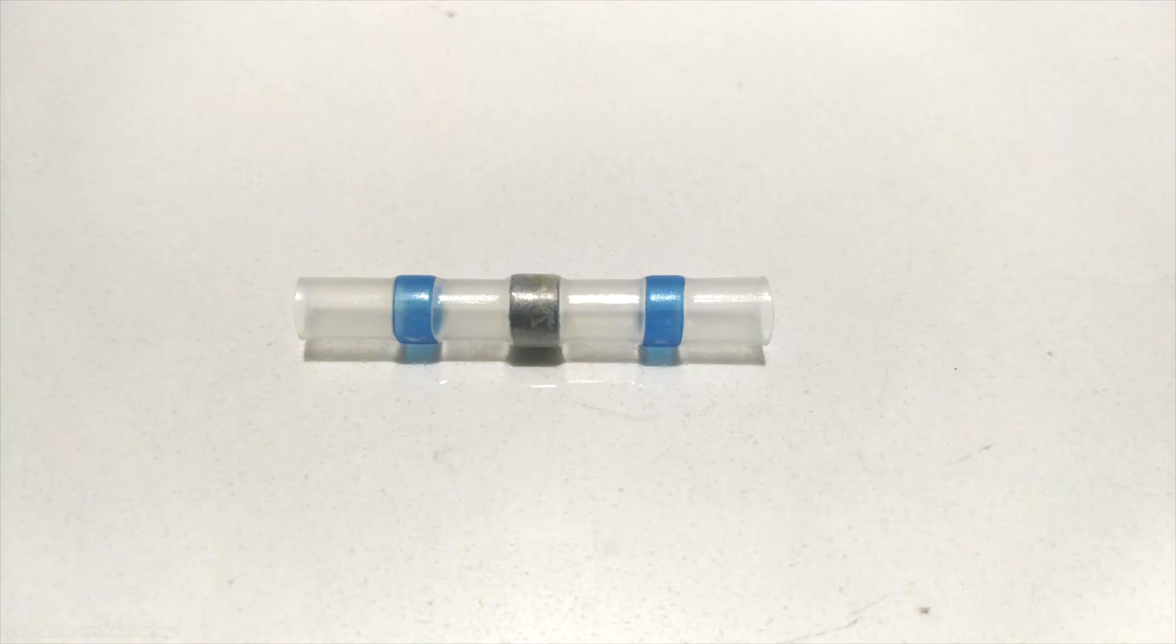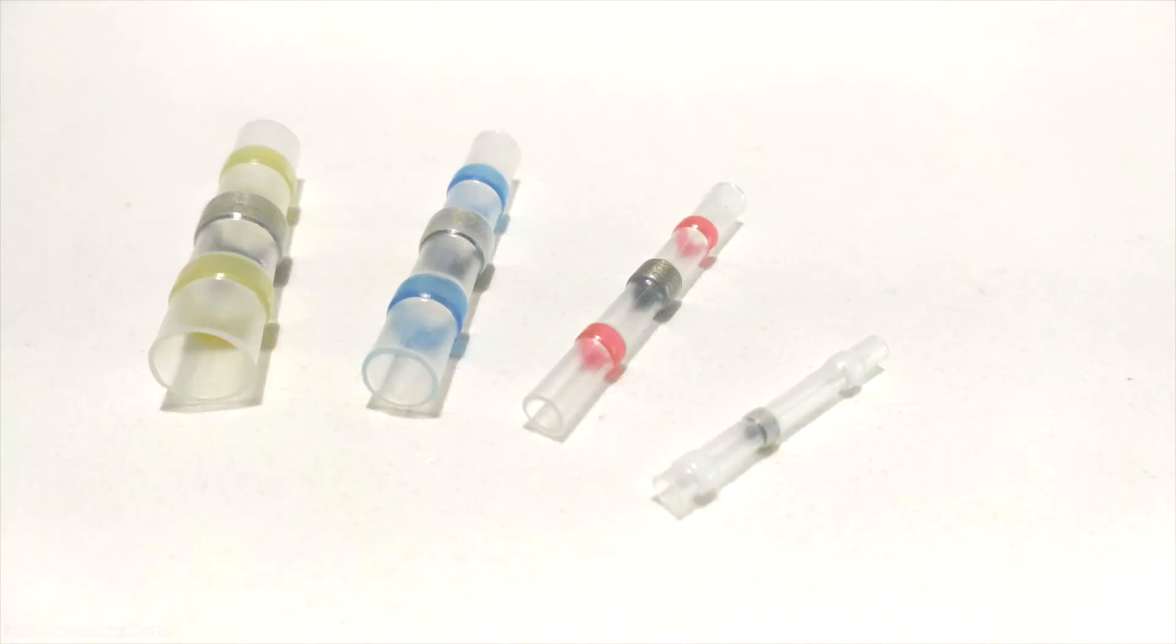The sleeves look like this. It's basically a piece of heat shrinkable tubing with a ring of solder in the middle built in. And the color bands that you see are the water resistant adhesive sealant. They come in several sizes for different wire gauges, from thick 10 gauge wires to wires as thin as 26 gauge.